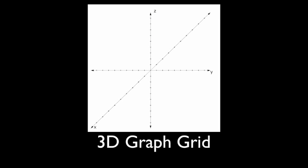So this 3D graph grid, the x-coordinate is kind of the front-back direction, right? The positive is front or forward, sort of towards you, and backwards is the negative x-direction.